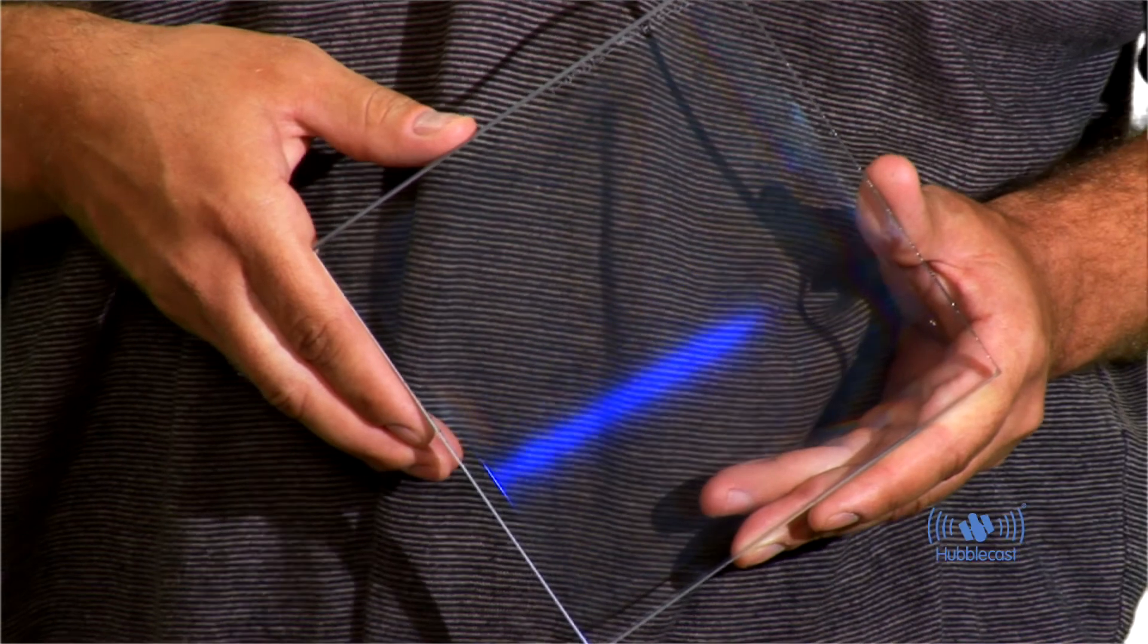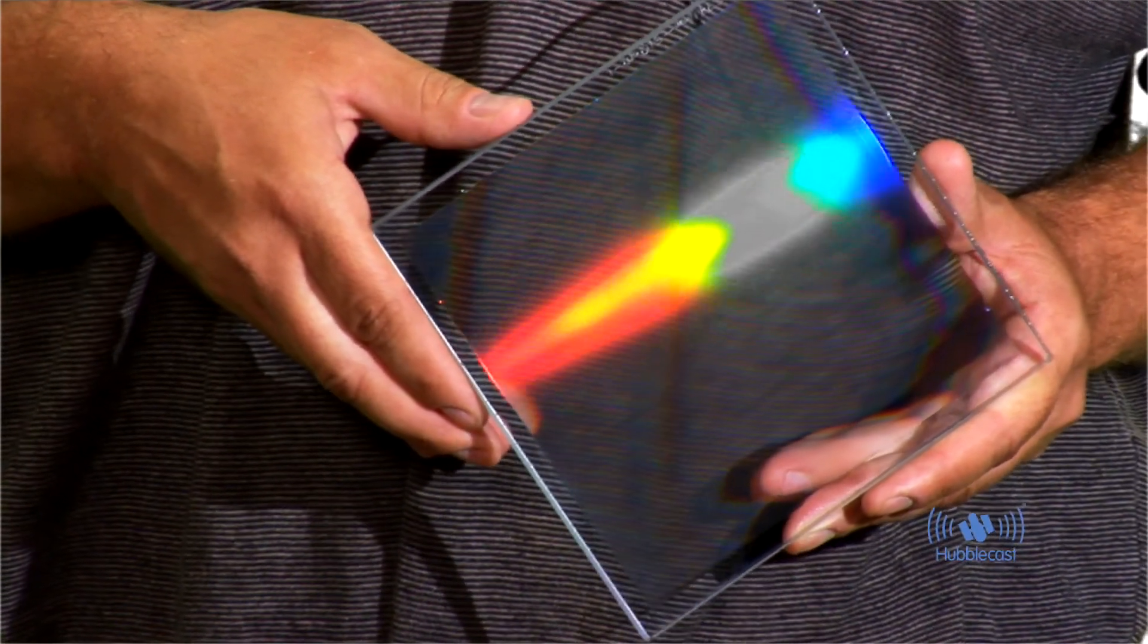The so-called grism mode in the advanced camera for surveys spreads the different colours emitted by the galaxies into short trails. This is an example of such a grism. One can see the rainbow colours as the light is spread out.